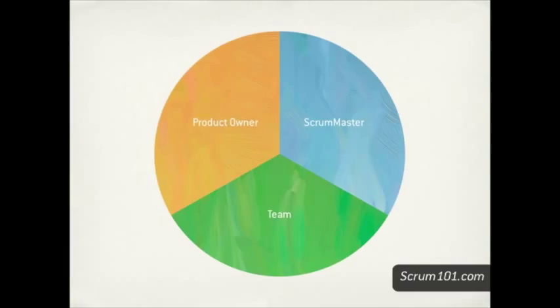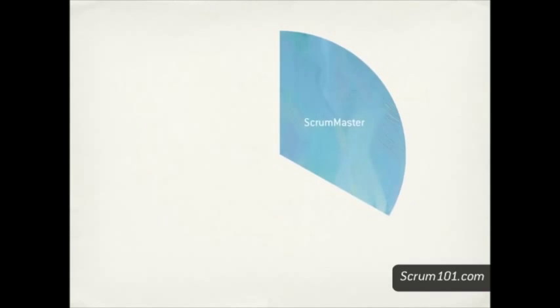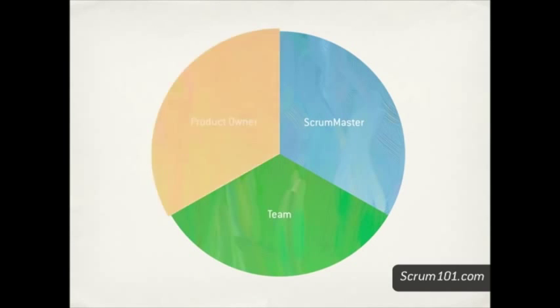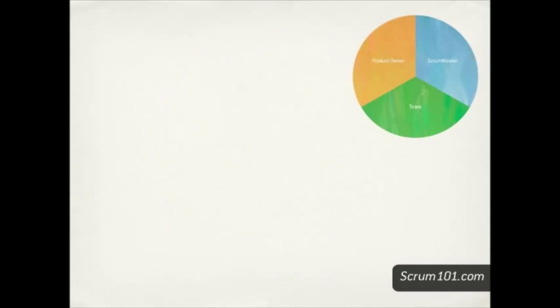Hello again, I'm Cain Ma. Scrum was designed with three equally yet distinct roles. These roles are the Scrum Master, the team, and the Product Owner. Let's look at each of these roles.